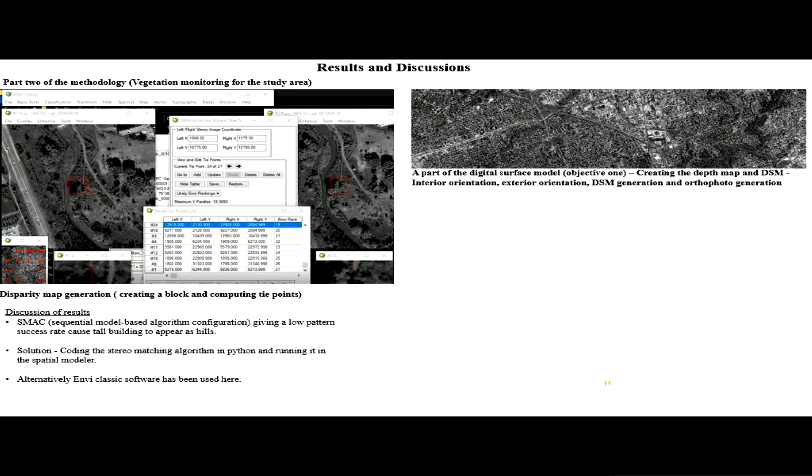I start by running tie points. There is creating the block, then tie points, interior orientation, exterior orientation. After you get the digital surface model, it ends with the orthophoto. That is the digital surface model.